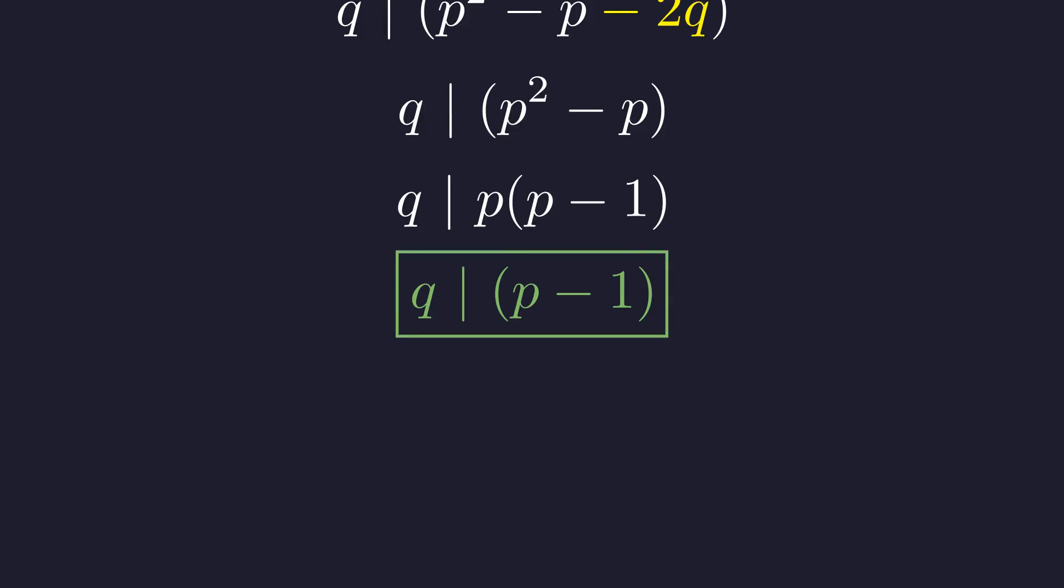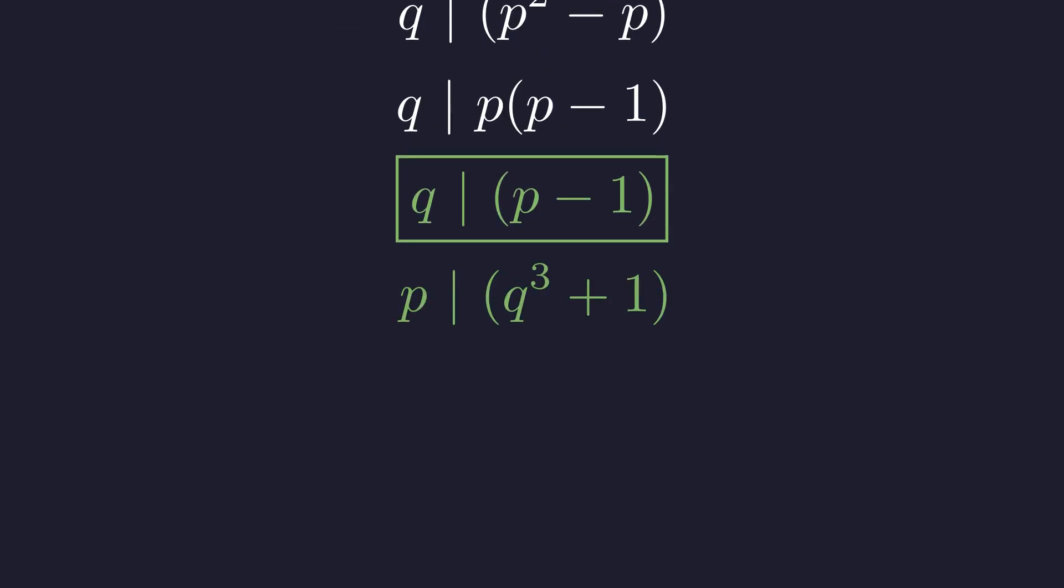Now for the second divisibility argument. The prime p must divide the right-hand side. Since p and q are distinct, p cannot divide q squared. Therefore, p must divide the quantity q cubed plus 1. This is our second major constraint.